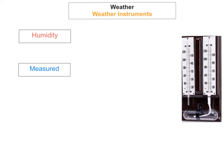The next instrument we're going to look at is used to measure humidity. The name of the instrument is called a hygrometer. It's measured in percentage.